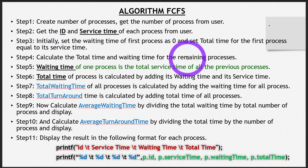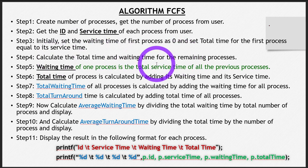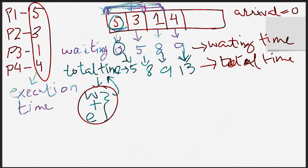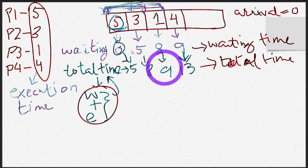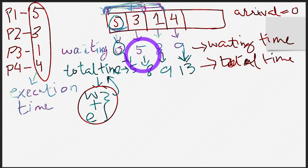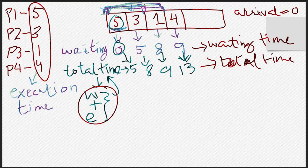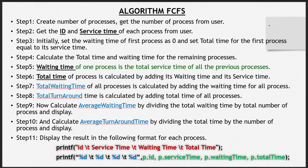Step four is to calculate the total time and waiting time for the remaining processes. We have covered this in detail — you have to calculate the waiting time and the total time, and in the same manner you have understood this concept, you can make your logic for this.